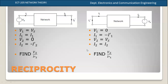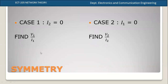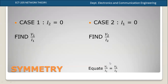Let's do the symmetry condition. Substituting I1 equal to 0 gives V2 by I2. The symmetry condition is V1 by I1 is equal to V2 by I2. This is the symmetrical condition.